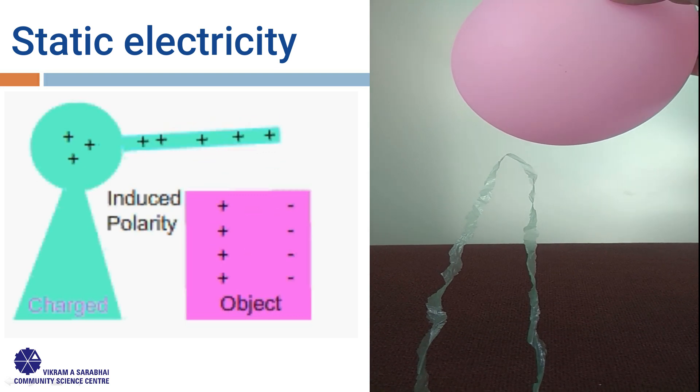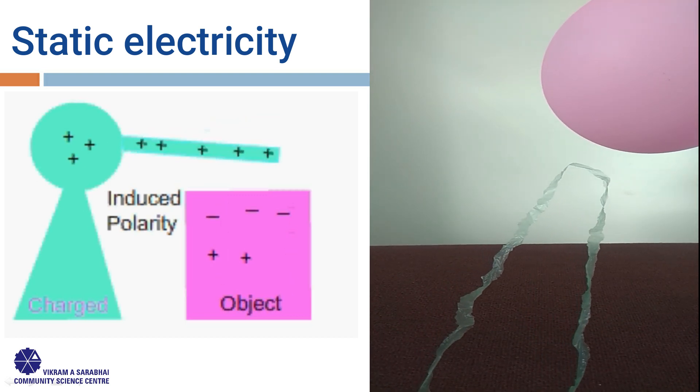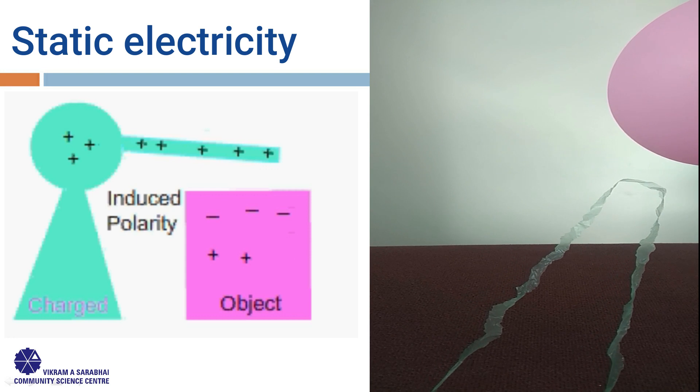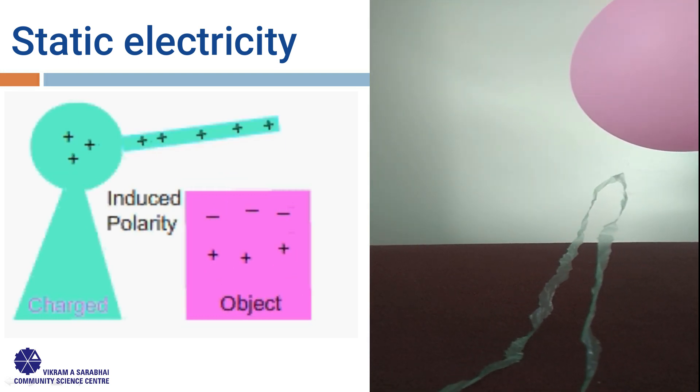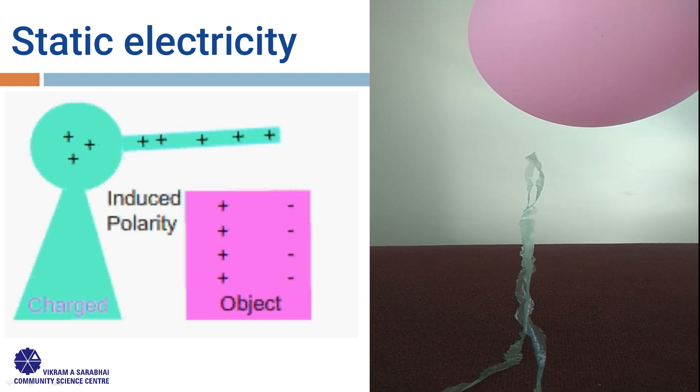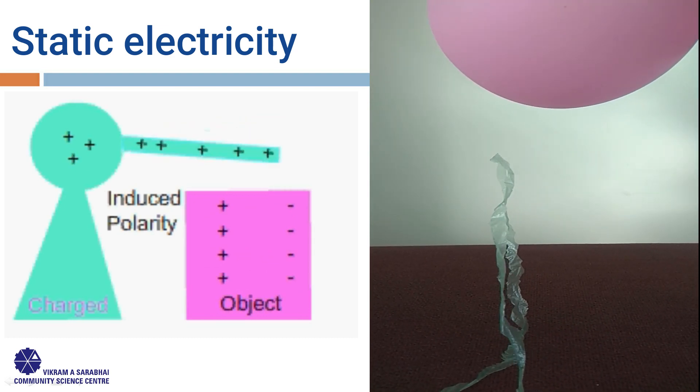Conductive materials like metals hold onto their electrons tightly, whereas insulating materials, such as plastic, can be charged by friction because they easily gain or lose electrons.